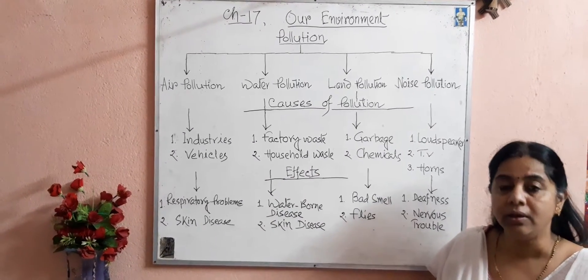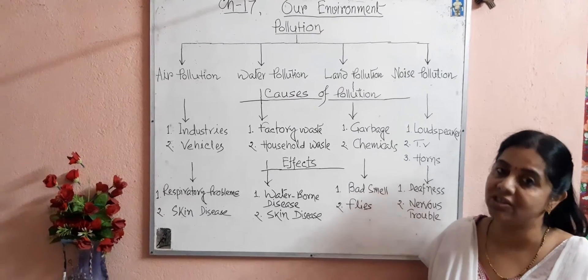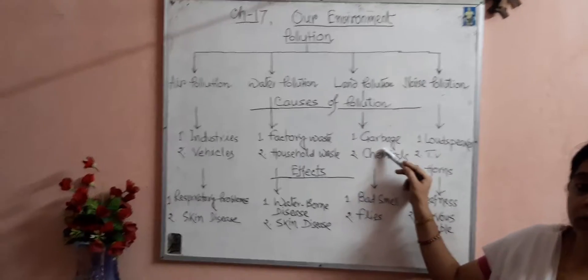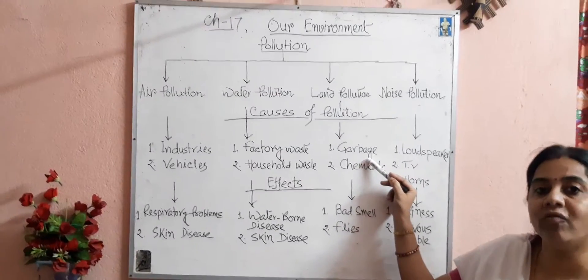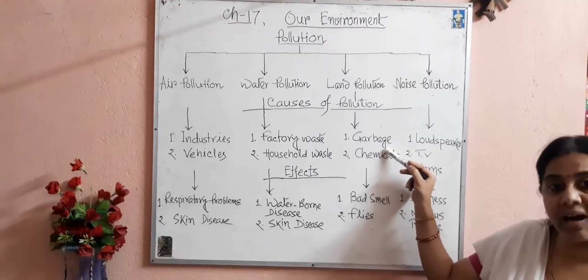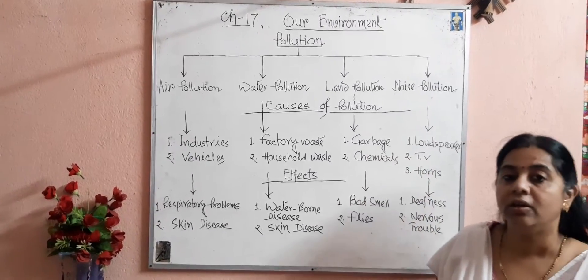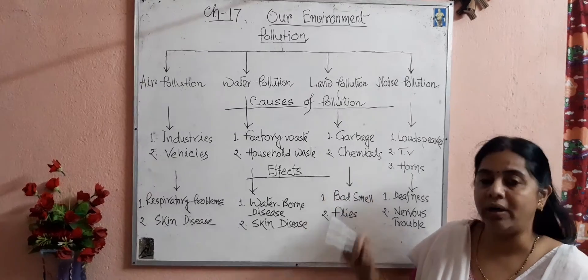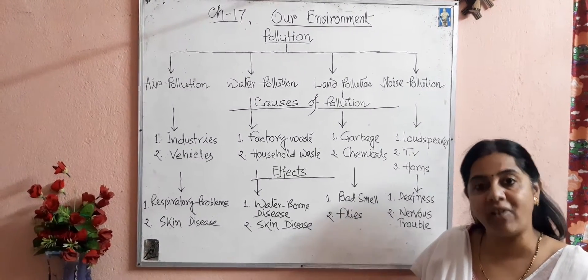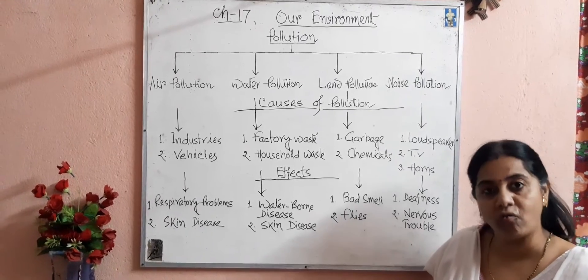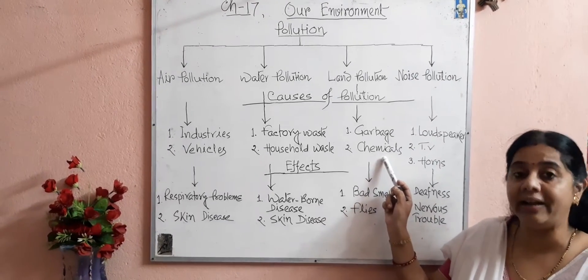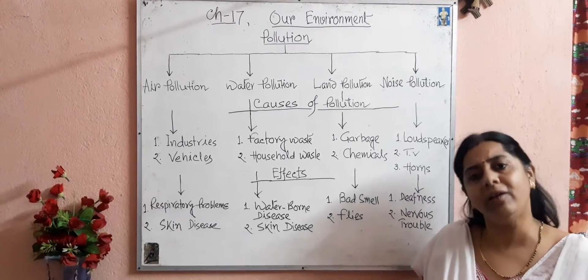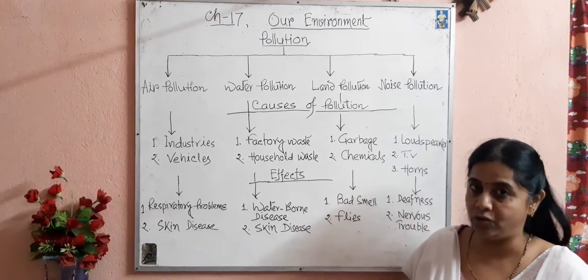Due to water pollution, aquatic plants and animals die. The main cause of land pollution is heaps of garbage — we should not dump garbage and plastic on the land openly. Using more chemical fertilizers and pesticides in crop fields also reduces the fertility of soil and pollutes the land, which is also called soil pollution.